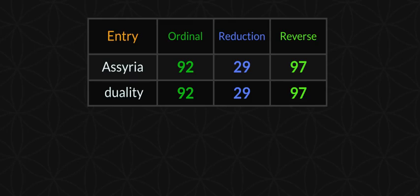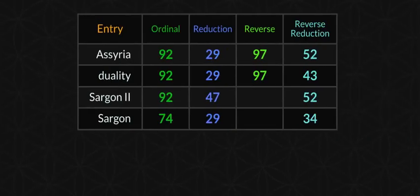Interesting here — how Assyria syncs up with duality. And this is a gematria decode — we see a lot of dualities. Toss Sargon in there, and Sargon the Second, and look at duality.